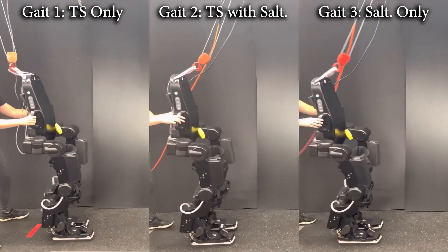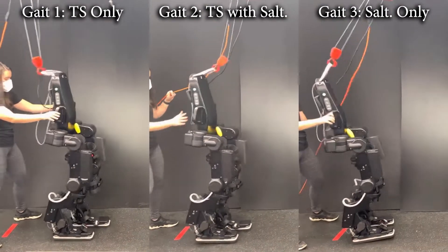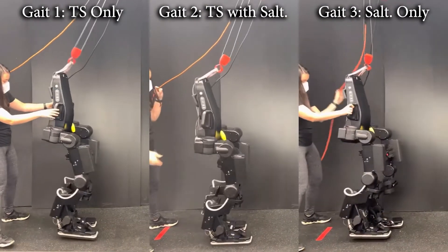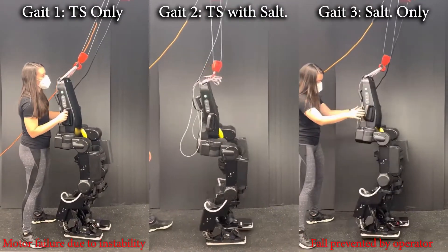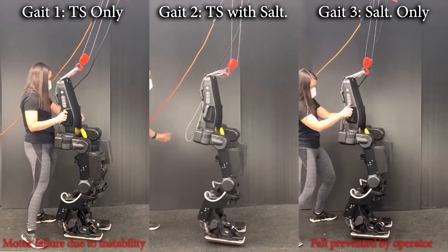On hardware, we generate gaits for the empty exoskeleton since our goal is to isolate the performance of the gaits without human interference. As before, only the gait with both cost function terms was able to realize independent and stable locomotion.